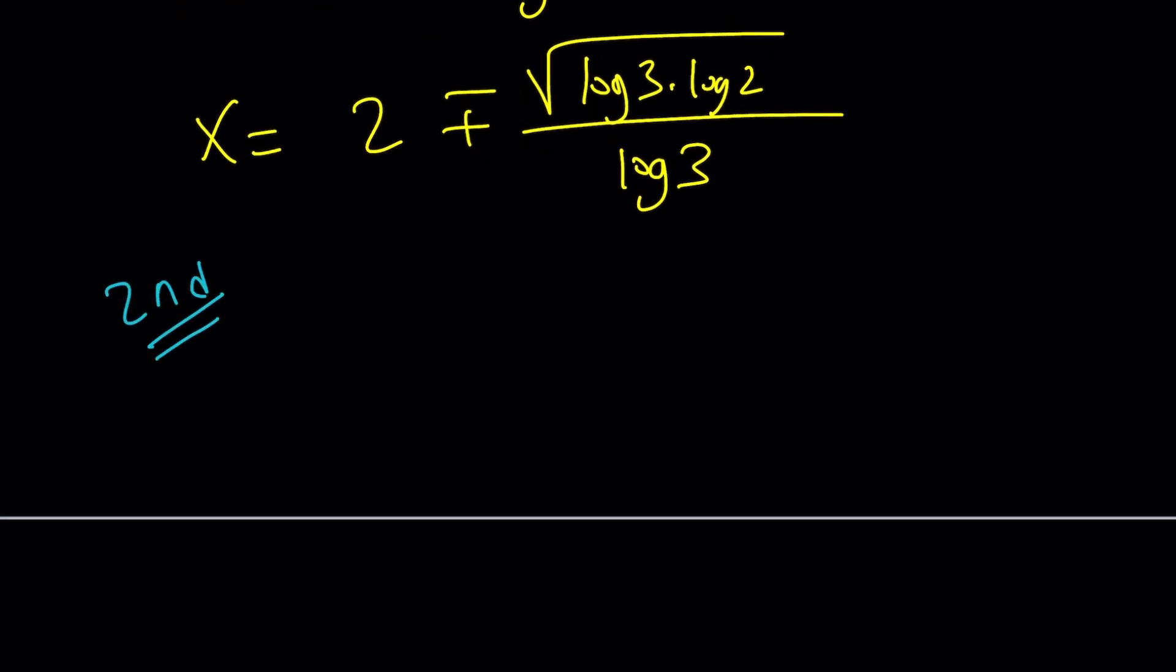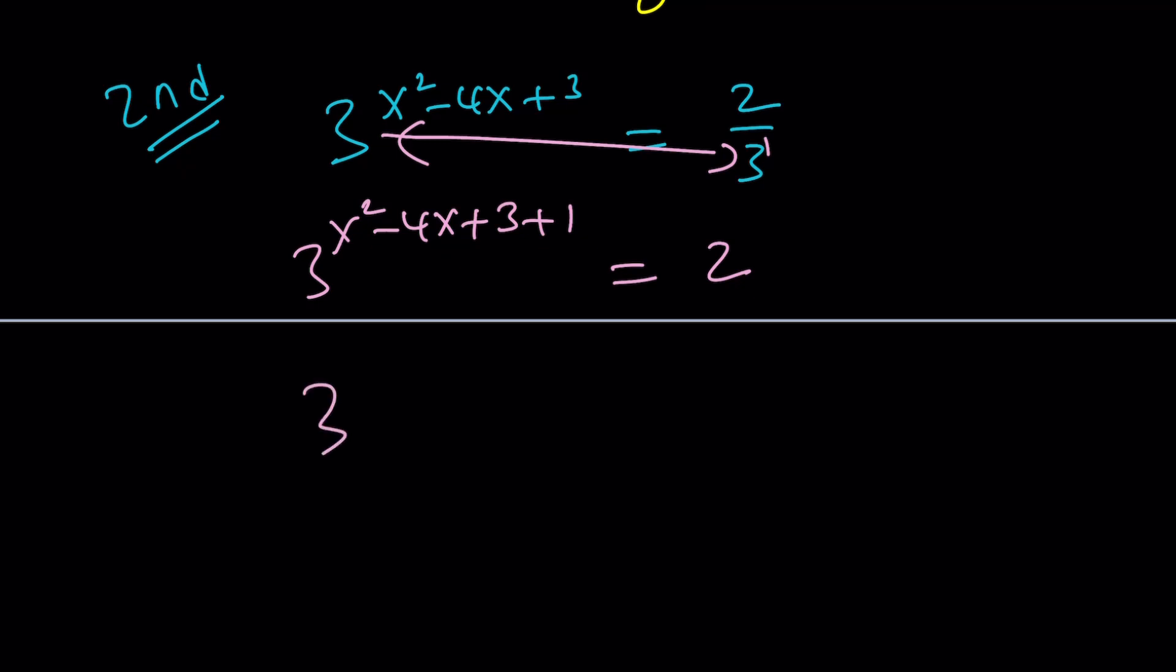So let's go ahead and talk about the second method. The second method is very different. It just uses algebraic manipulations. It also uses logs, but at the end. So first step, we're going to cross multiply. Why? Because these are both powers of 3. When we multiply them together, the exponents are added. And this is 3 to the first power. And now we have a really nice expression.